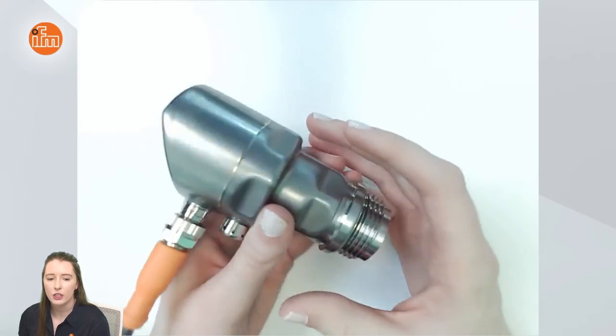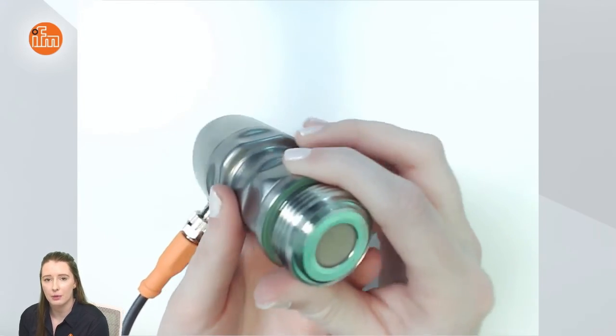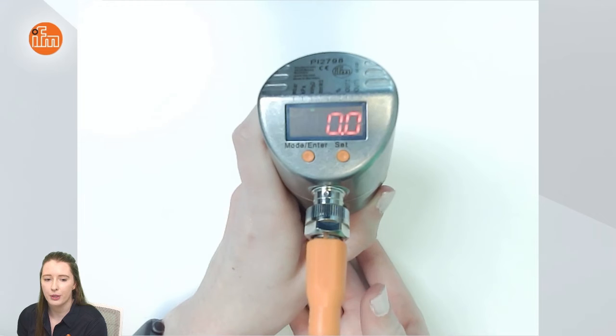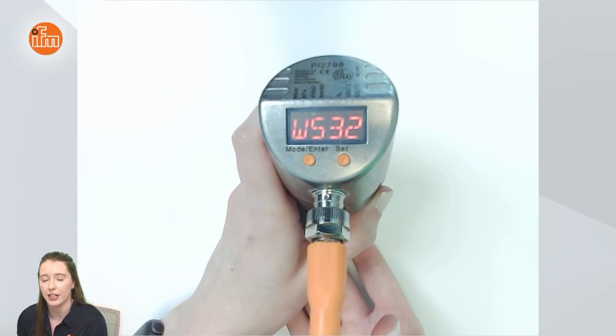So finally you can see the ceramic measuring cell on the bottom of the sensor and if I apply pressure to this you will see the pressure on the display increase.